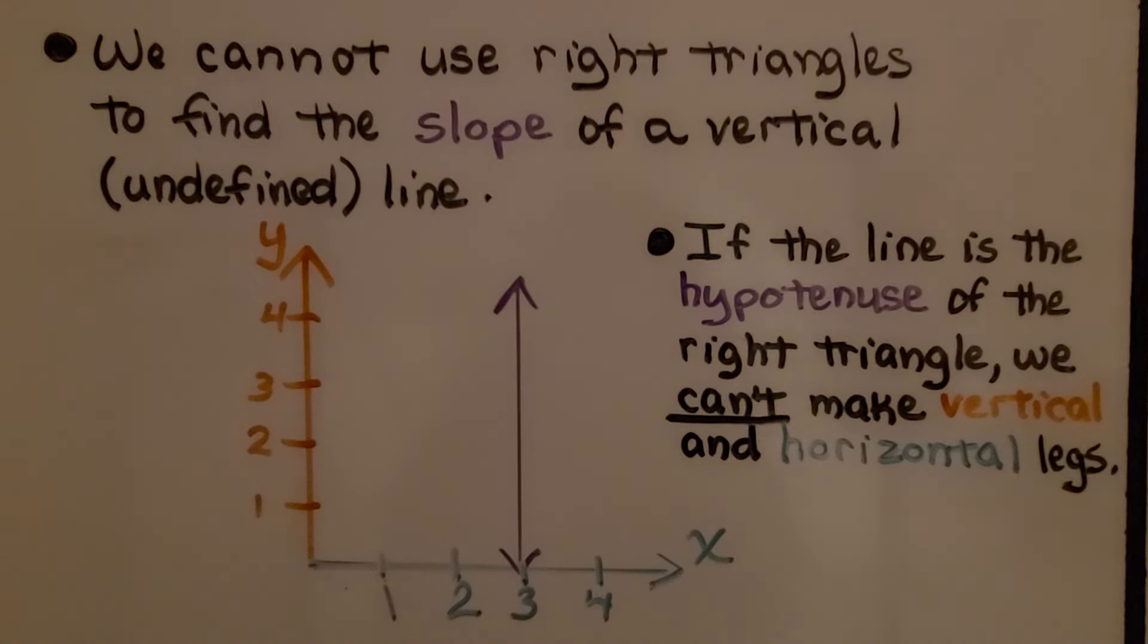We cannot use right triangles to find the slope of a vertical line, an undefined line. If the line is the hypotenuse of the right triangle, we can't make vertical and horizontal legs. Can't do it.